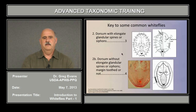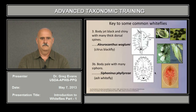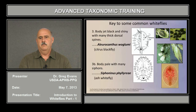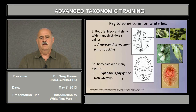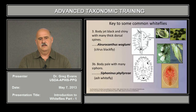The next part of the couplet deals with having elongate spines or siphons on the dorsum versus not having them. In the citrus black fly, Aleurocanthus woglumi, the body is black and very shiny, and it has these very long, acute-tipped spines on the body. Versus the other one, Siphoninus phillyreae, which is the ash white fly and has siphons, and the body is pale. They have little exudates coming out of these siphons.